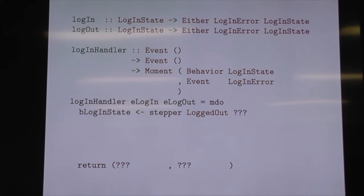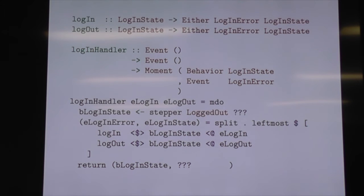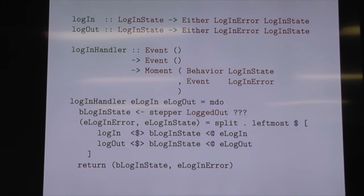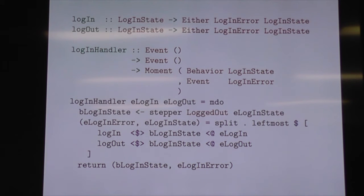We use our login and logout functions with our login and logout events, but we sample the logged-in state on the way, because that determines whether we get an error or not. We combine both of those with leftmost, then split them so the errors are on the left and the login state is on the right. Then we just need to fill in those question marks — we've got one event, it's the login state. That is recursive do. In Reactive Banana, it is always safe to have value recursion where a behaviour depends on an event or an event depends on a behaviour. But yeah, that's the tamest example of recursive do we can come up with. Various functions aren't primitive — they can be defined using other primitive functions in recursive do.